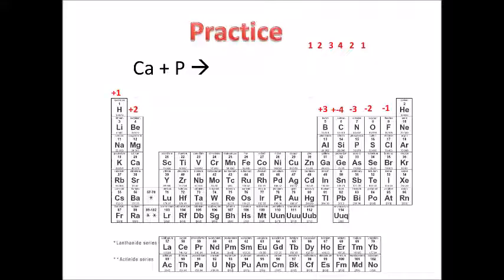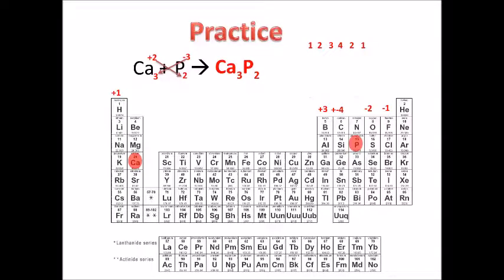Last problem: calcium and phosphorus. Calcium is in group two, so its oxidation number is plus two. Phosphorus in group 15 has an oxidation number of negative three. Drop the signs and cross the numbers: three comes down as the subscript for calcium, and two comes down as the subscript for phosphorus. Our product is Ca₃P₂. I hope you learned something from this lesson — leave a comment, suggestions are always appreciated, and thanks for watching.